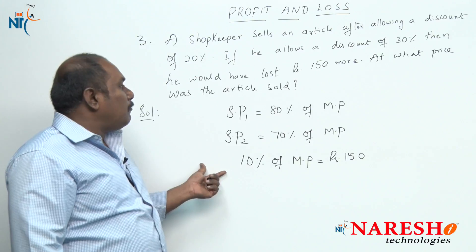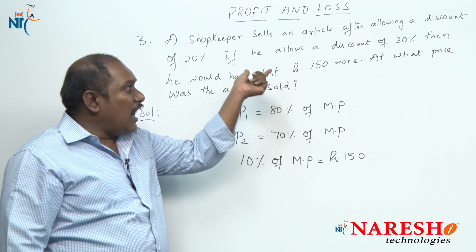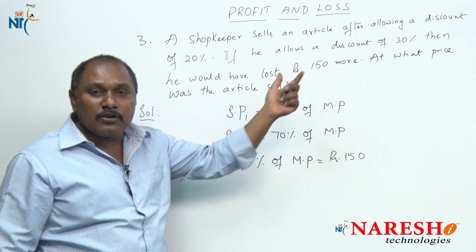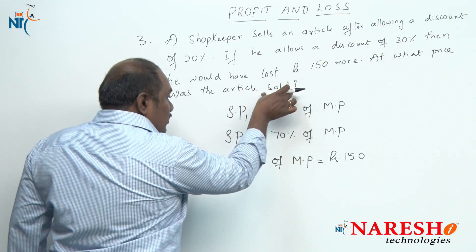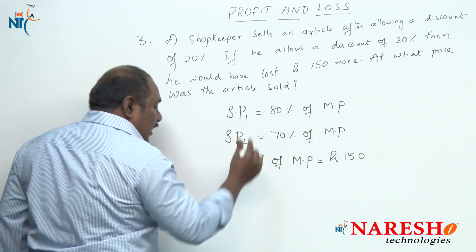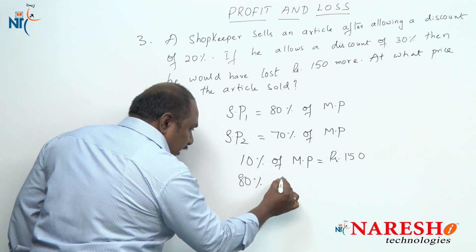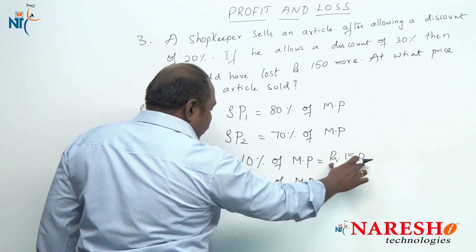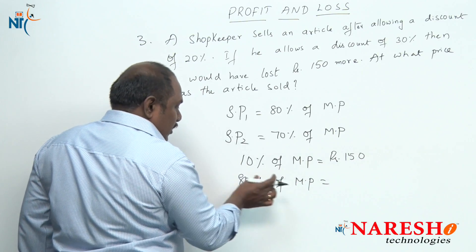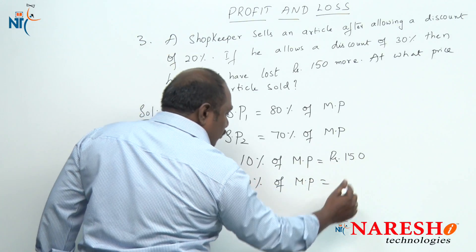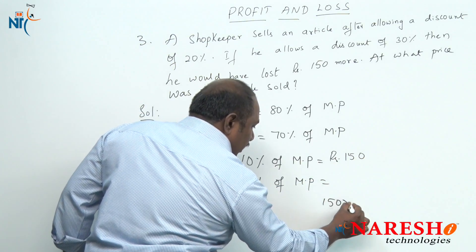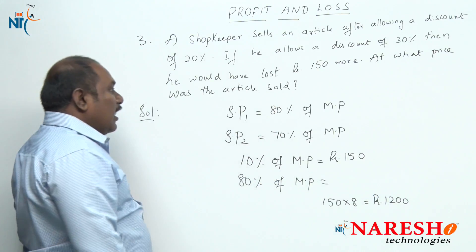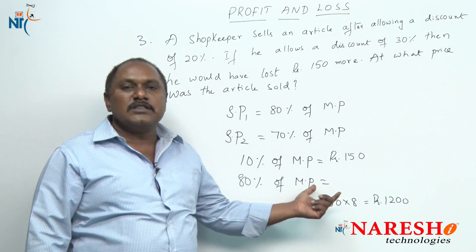The question asks at what price was the article sold. The article was actually sold at 80 percent of marked price after giving a discount of 20 percent. So we need to find 80 percent of marked price. If 10 percent of marked price is 150, then 80 percent of marked price is 8 times 150, which is rupees 1200. So the article was sold at rupees 1200.